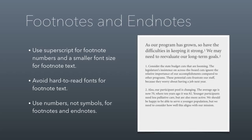Use numbers, not symbols, for footnotes and endnotes. There's an old convention of using a section symbol, then an asterisk, then a cross, and stacking them if you had many — that's terrible and has not survived today. You might see older documents written that way, but today footnotes should always be numbered.